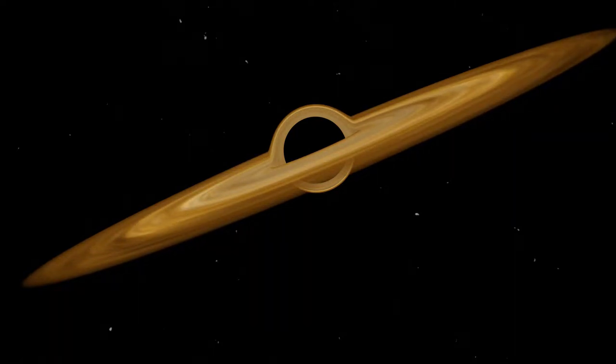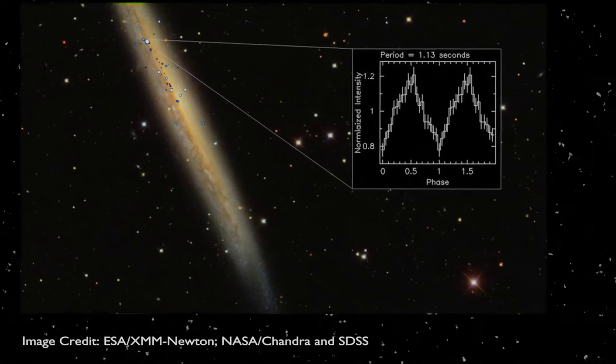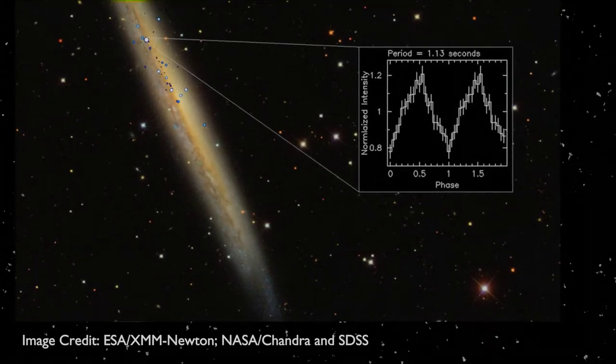Now into the five contributions I want to highlight. The first contribution should be no surprise. It's a Neutron Star contribution. And that contribution is that NuSTAR helped in discovering the brightest pulsar. NuSTAR observed the source NGC 5907ULX, that ULX standing for ultraluminous x-ray.